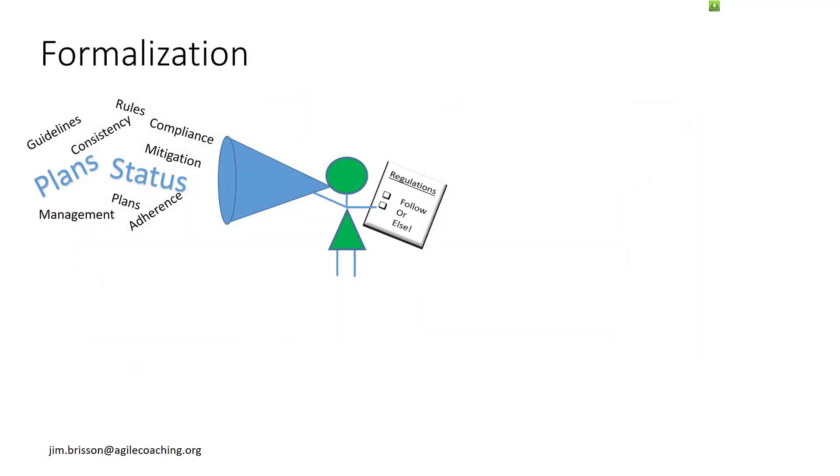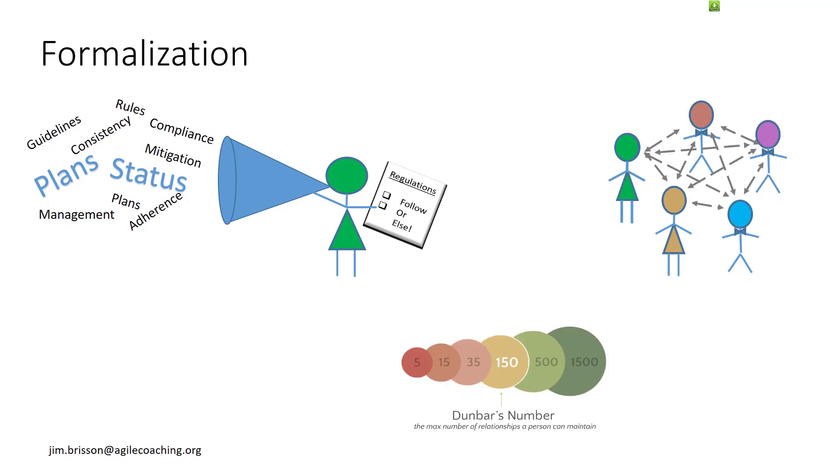Now, formalization is the extent to which processes, rules, and plans are created and monitored. That's versus allowing groups to self-manage. And that whole discussion reminds us of Dunbar's number and how smaller organizations and less distance will help us get by with less rules, planning, and meetings.